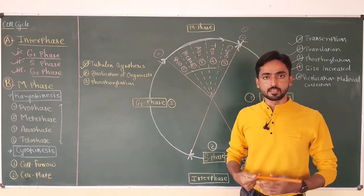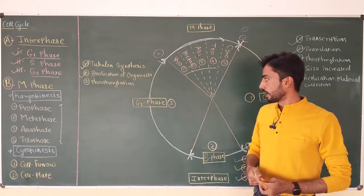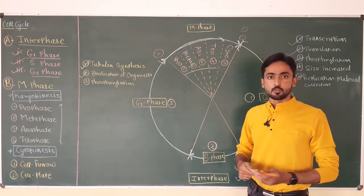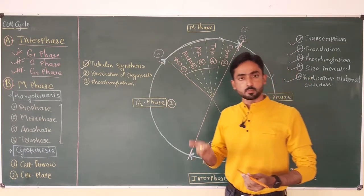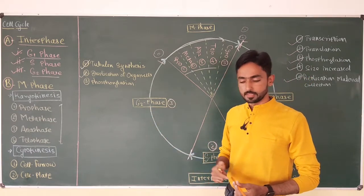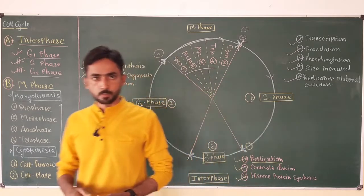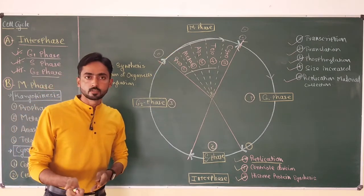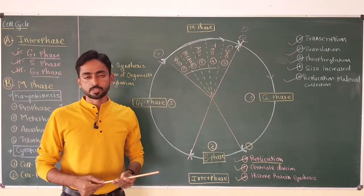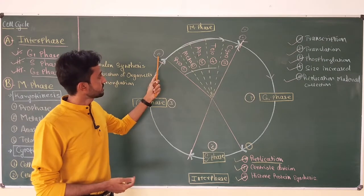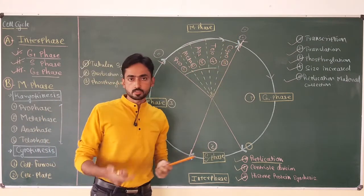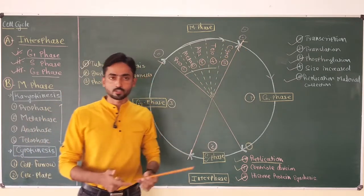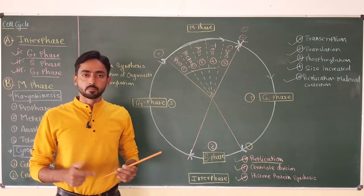Tubulin is the protein necessary for synthesis of spindle fibers. Phosphorylation also occurs in G2 because during M phase the cell is going to need a large amount of energy, which is produced during G2. The next phase after G2 is M phase. M stands for either mitosis or meiosis. Mitosis is somatic cell division in which one cell divides into two daughter cells, while in meiosis — germline cell division — one cell divides into four daughter cells. We will discuss mitosis and meiosis in detail in future videos.